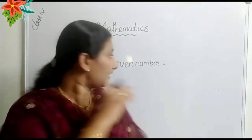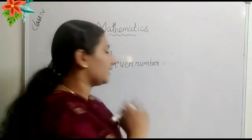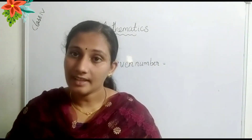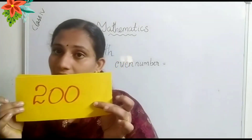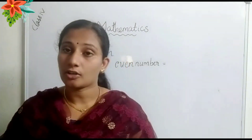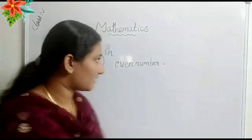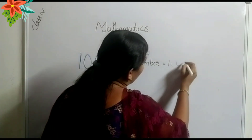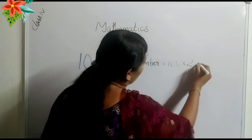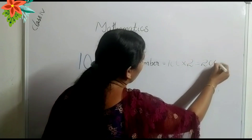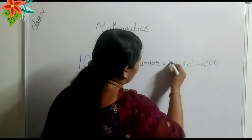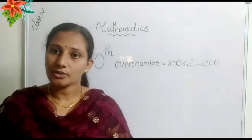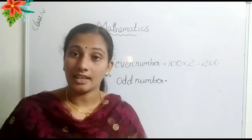Which one is the hundredth even number? That is two hundred. How do we get two hundred? Hundred into two — that is two hundred. Double of hundred. Hundred into two is equal to two hundred.